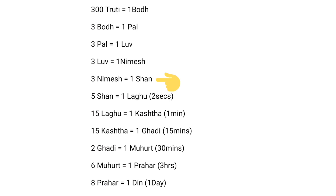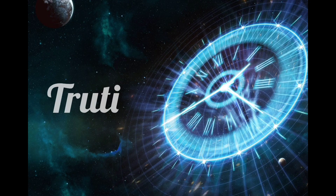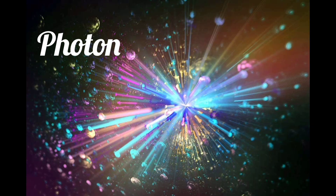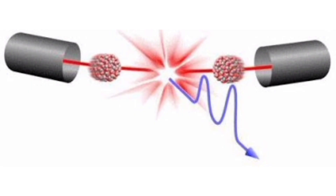And 1 Laghu or 2 seconds is made of 5 Sharn. 1 Sharn is made of 3 Nimesh. And 1 Nimesh equals 3 Love. Now 1 Love is equal to 3 Pal, and 1 Pal is made of 3 Bodh. And finally, 1 Bodh is equal to 300 Thruti. So a Thruti is the smallest Vedic unit of time. The time a photon — a particle of light travelling at 3 lakh km per second — takes to cross a Trasrenu or an atom is called a Thruti.